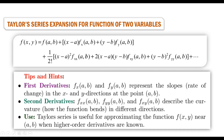Here we have some tips and hints. The first-order partial derivatives represent the slopes — that is, the rate of change in the x as well as the y direction at the point (a, b). Second-order partial derivatives generally describe the curvature, how the function bends in different directions. The Taylor series is very useful for approximating a given function near the point (a, b) when higher-order derivatives are known.